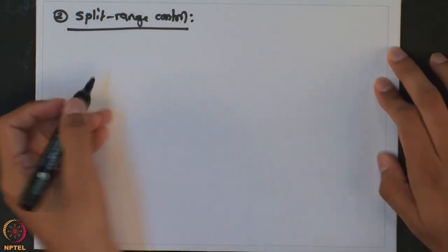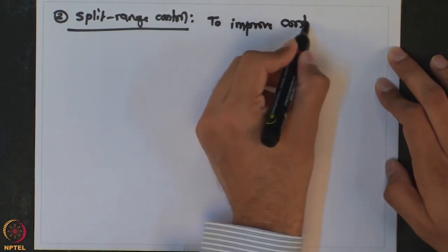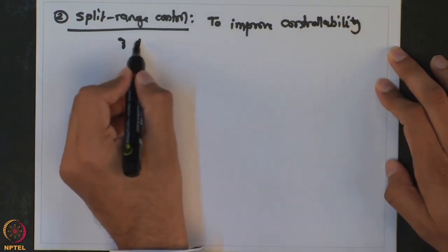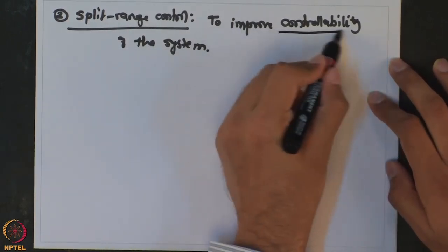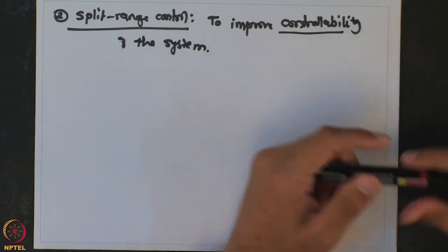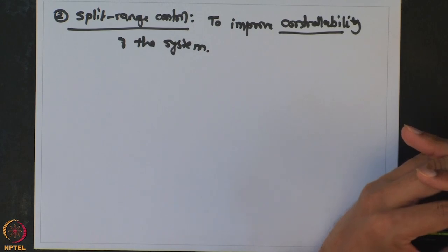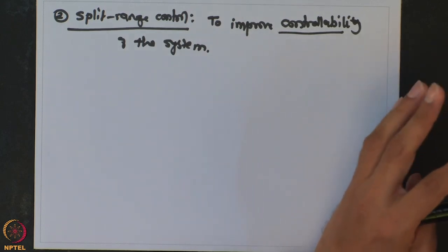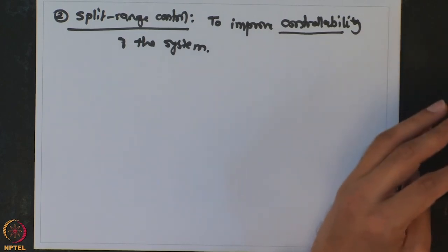Split range control strategy is implemented to improve controllability of the system. I am using a very crude notion of controllability here — controllability has a deeper meaning in process controls or control theory literature. What I want to represent is that you want to improve the range of disturbance across which you want to make the process remain controllable.